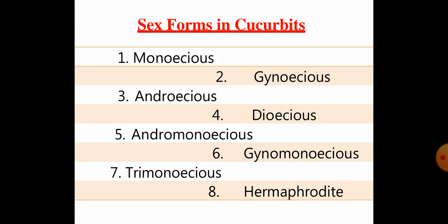The sex forms in cucurbits — when you see the sex forms, there are eight different types. These are: monoecious, gynoecious, androecious, dioecious, andromonoecious, gynomonoecious, trimonoecious, and hermaphrodite. First, monoecious — this is the advanced form where the plant produces both male and female flowers on a single plant. The majority of cucurbits exhibit monoecious condition.